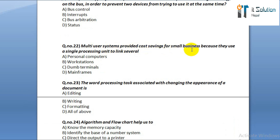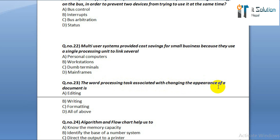Question number twenty-two: multi-user systems provide cost saving for a small business because they use a single processing unit to link several option A: personal computers. Option B: workstations. Option C: dumb terminals. Option D: mainframes.